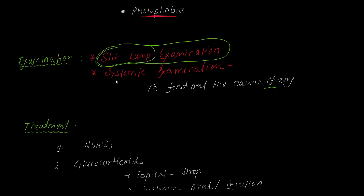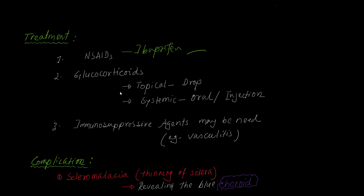How will you treat this patient? First, to relieve the pain, NSAIDs like ibuprofen and glucocorticoids are used. If symptoms are mild, topical glucocorticoid eye drops may be enough. Usually, however, systemic glucocorticoids in oral or injectable form may be needed. In severe cases involving vasculitis, SLE, or severe rheumatoid arthritis, immunosuppressive agents may also be required. Steroids are the main treatment.